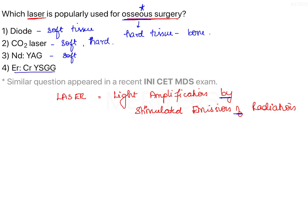Erbium chromium YSGG laser is a hard tissue laser. Out of the four given options, the one popularly used for osseous surgeries is the erbium chromium YSGG laser, which is used for hard tissue procedures.